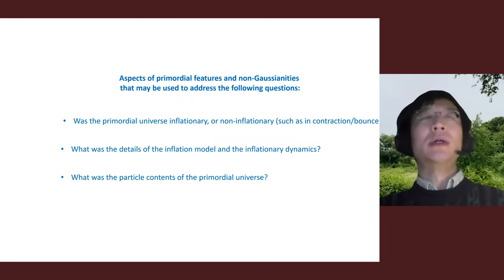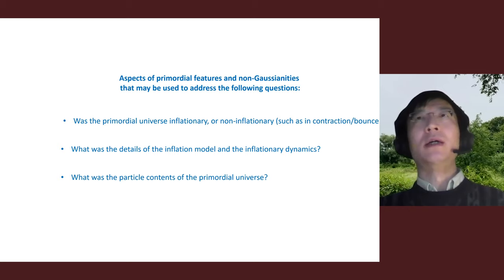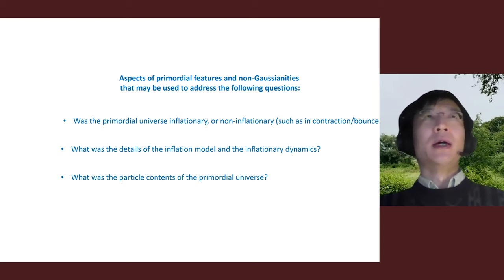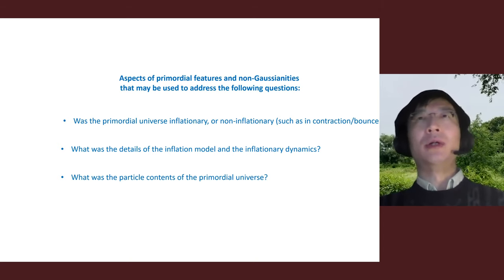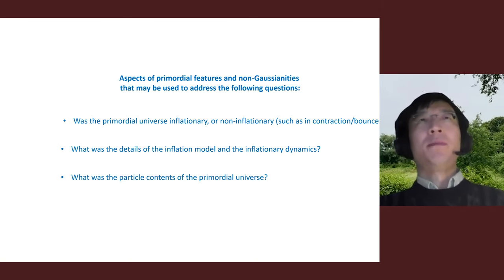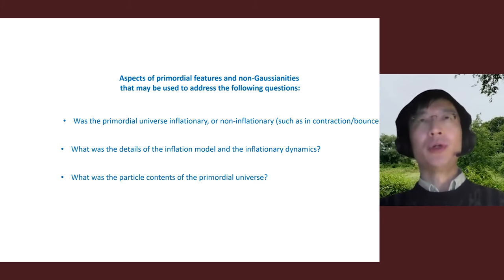These questions include, for example: was the primordial universe governed by inflation, or was it an alternative to inflation such as contraction-bounce models and bounce scenarios? And if it's inflation, what were the details of the inflation model and dynamics, and what was the particle content of the high-energy primordial universe?